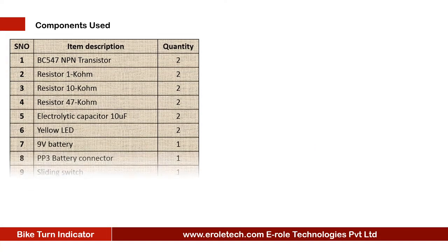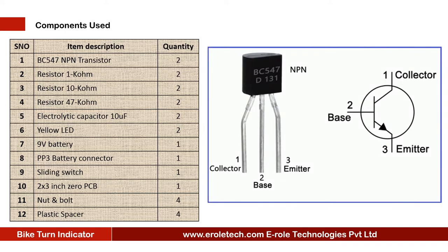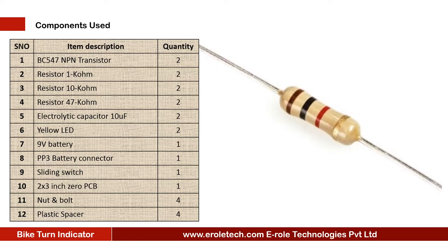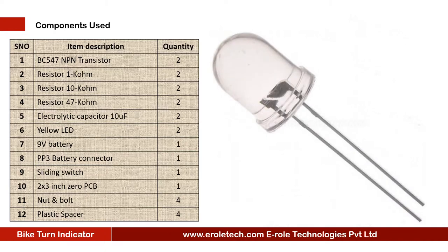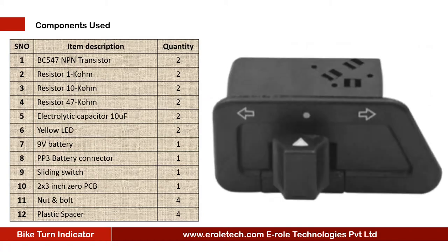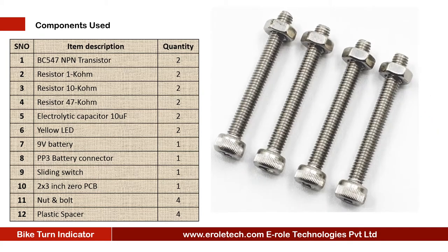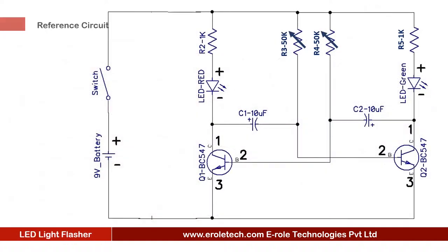These are the components needed for this project: 2 NPN transistors BC547, 2 1-kilo-ohm resistors, 2 10-kilo-ohm resistors, 2 47-kilo-ohm resistors, 2 10-microfarad electrolytic capacitors, 2 yellow LEDs, a 9-volt battery, a PP3 battery connector, 1 slider switch, 1 PCB, 4 screws with nuts, and 4 plastic spacers.